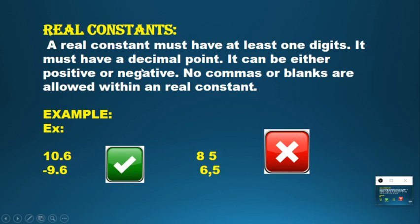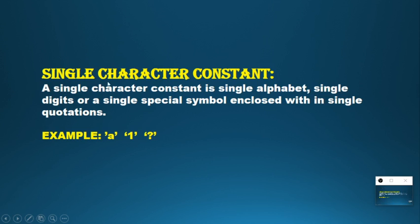Coming to the real constant: a real constant is essentially a float constant and it accepts decimal points. For example, 10.6 and 9.6 are accepted, and it can be positive or negative. However, commas and blank spaces are not accepted. For instance, '8 5' with a space or '6,5' with a comma are not accepted.